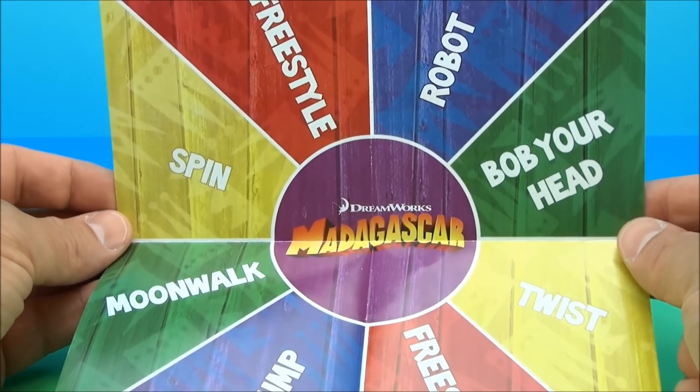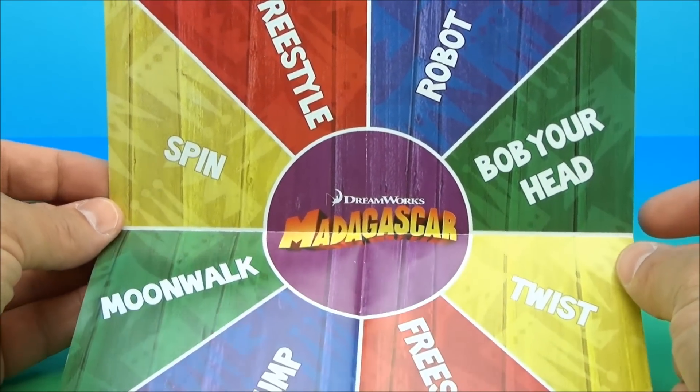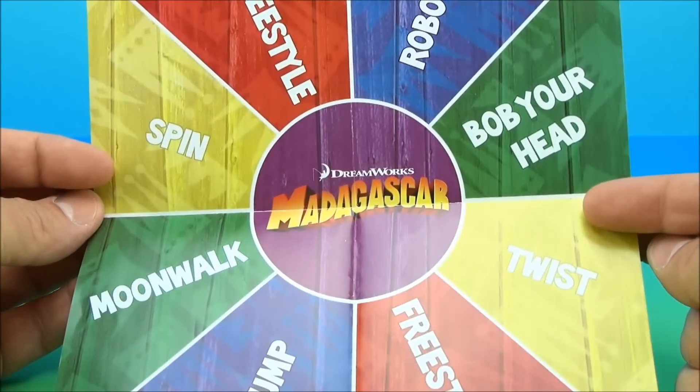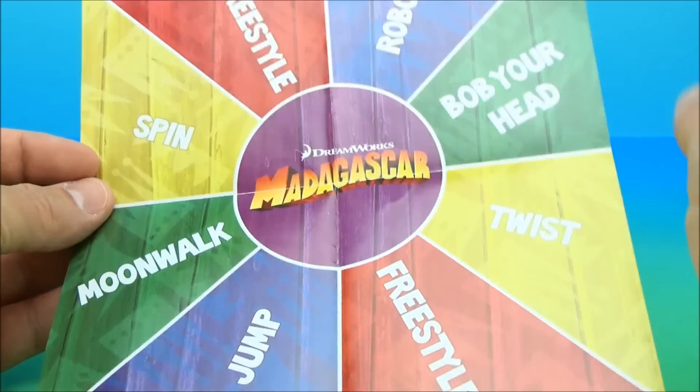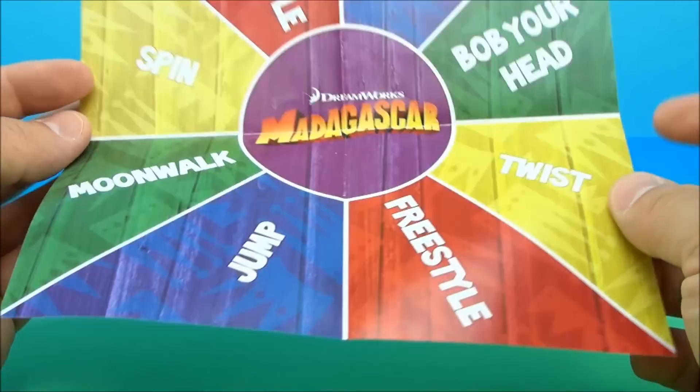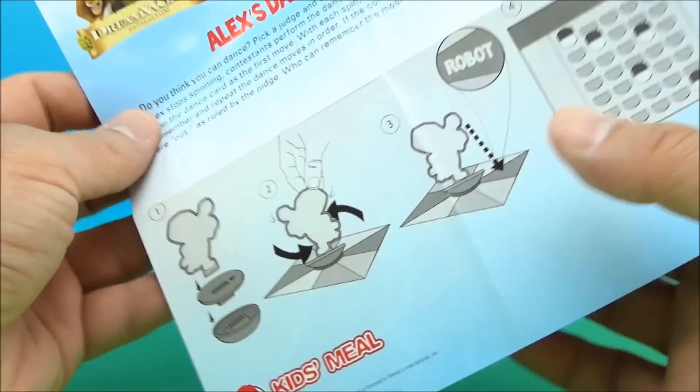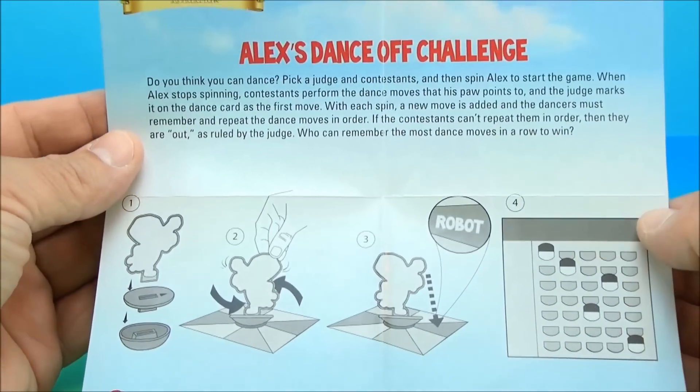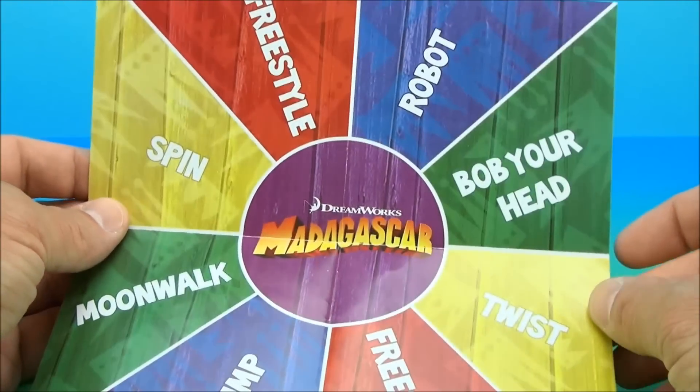Madagascar! This is Alex's Dance-Off. So you've got a little spinner here. You've got this little placemat. These are different moves that you're supposed to do. It says to use Alex and just spin him around on this thing and wherever it lands that's what you have to physically do.